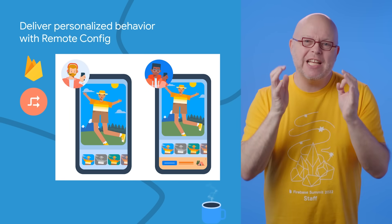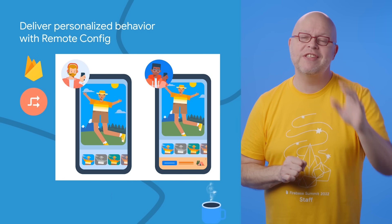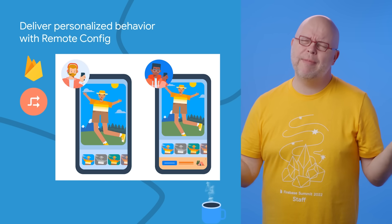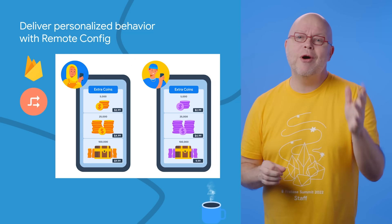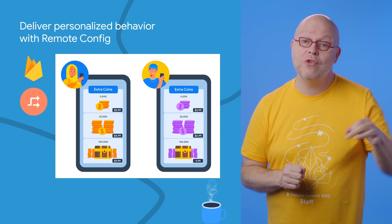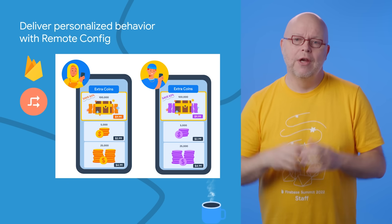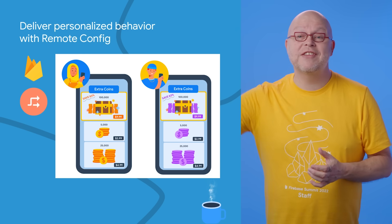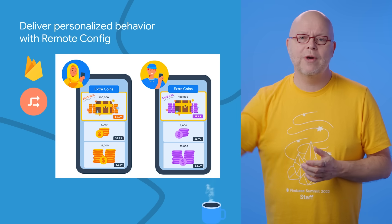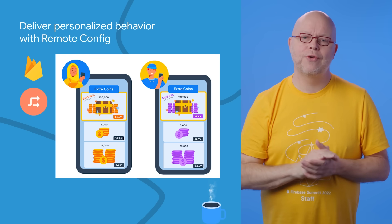One way to deliver the best experience for each of your users is to customize your app for their individual preferences and behavior, but publishing a separate version of your app for each user may be a bit too much. Remote Config can automatically deliver an optimized experience for each of your users by using the power of Google's machine learning. With this personalization feature, you provide the configuration data that defines the different experiences in your app, specify what type of event or value you'd like to optimize for, and Remote Config takes it from there, applying the right personalized configuration for each of your users.